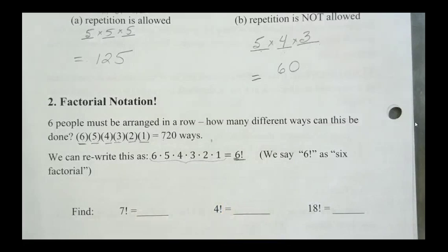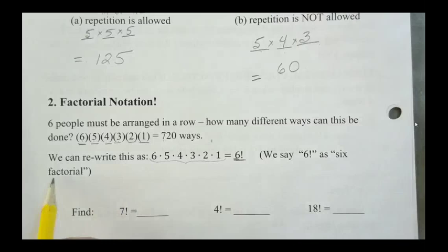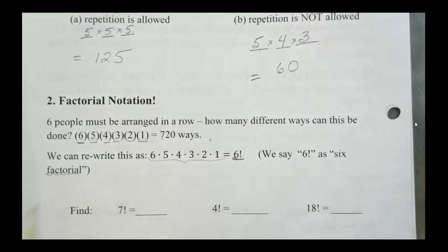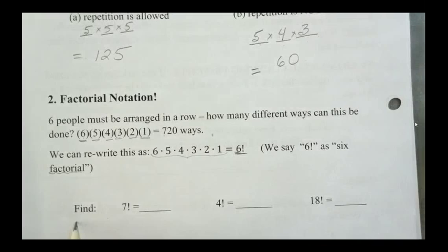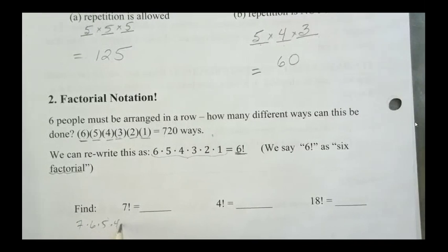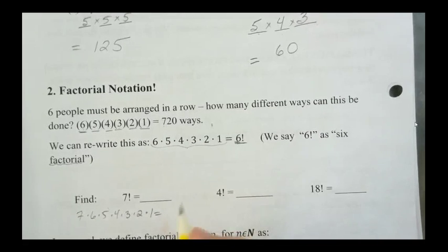So the exclamation mark is read as the word factorial. So seven factorial would be seven times six times five times four times three times two times one. So what does that equal? 5,040.